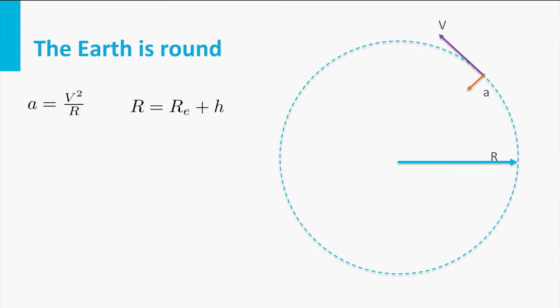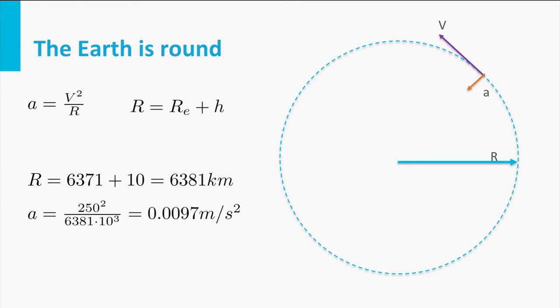The question is: how large is this acceleration? From high school physics we know that the acceleration equals V² over R. Most aircraft have a cruise altitude of about 10 kilometers, so the radius equals the radius of the Earth plus 10 kilometers — about 6,381 kilometers. A typical velocity for a commercial aircraft is about 250 meters per second, or Mach 0.8. The acceleration equals 250² divided by the radius, yielding 0.0097 m/s², which is only 0.1% of gravitational acceleration. So we can neglect it and make the flat Earth assumption.